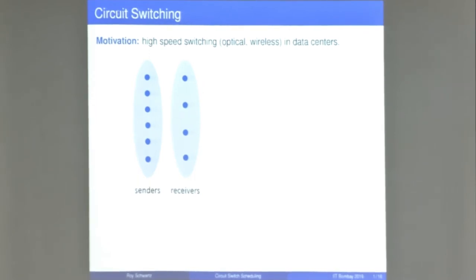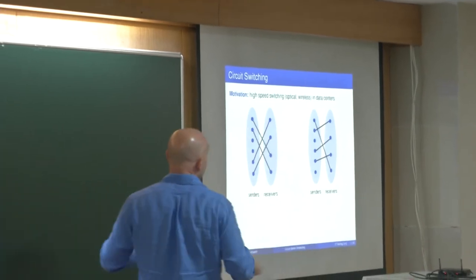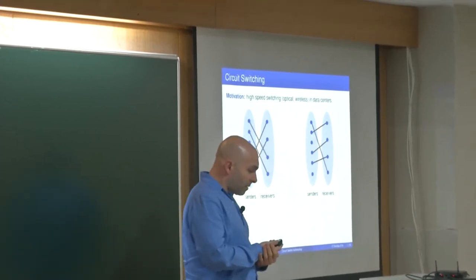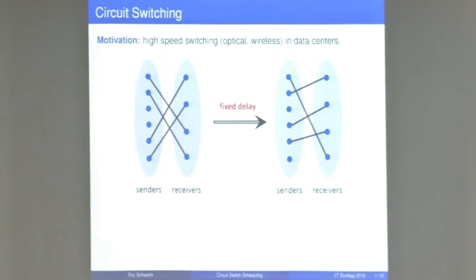So essentially what we're looking for is a matching. This matching dictates which sender sends information to each receiver, and we keep this matching for some duration of time. Then at some point we want to switch to a different matching, which dictates a different routing in the data center. In modern data centers, if you use optical or wireless methods, this switching incurs a cost — a fixed amount of time called the switching cost where nothing can be routed.